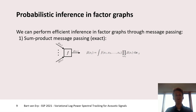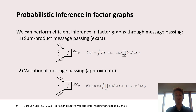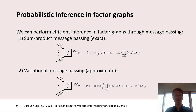If we cannot perform exact probabilistic inference, for example because the integral becomes intractable, then we can resort to so-called variational message passing. Here we approximate our posterior distributions by tractable posterior distributions, usually constrained to a certain family of distributions. Through sending these variational messages, we are effectively minimizing the variational free energy of our model.